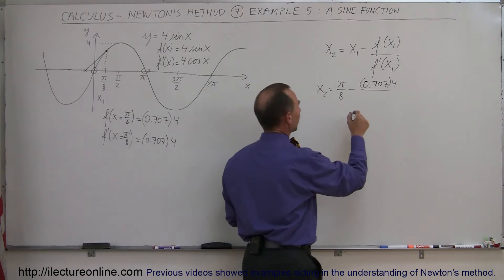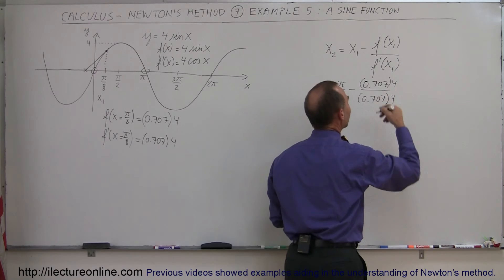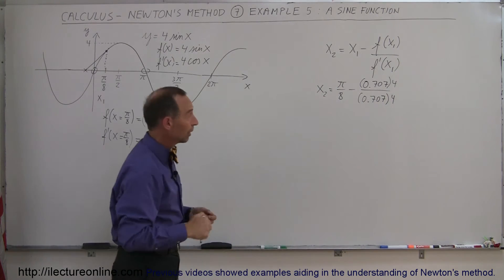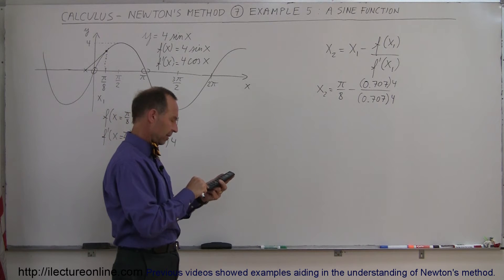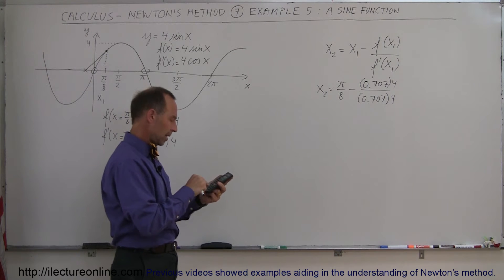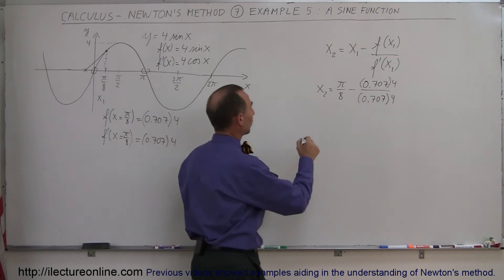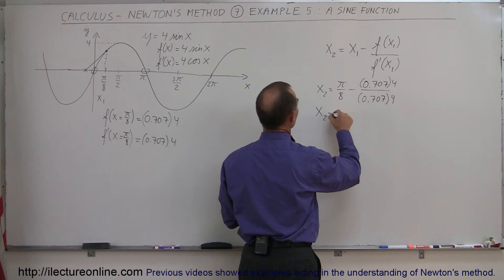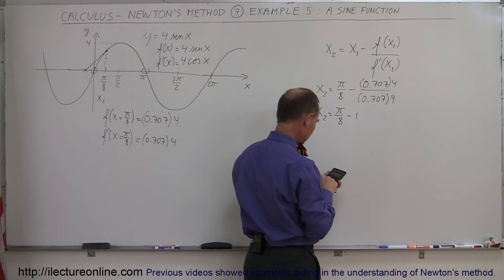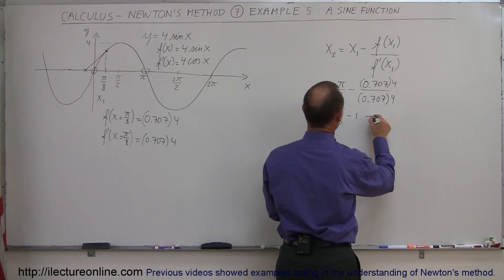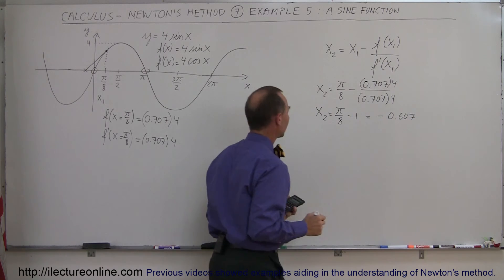You can see that the numerator and the denominator are the same, so that ratio equals 1. Therefore x₂ is equal to π/8 minus 1.